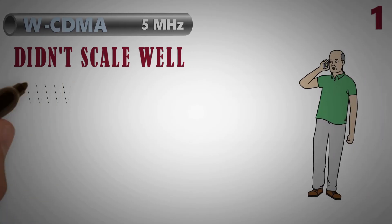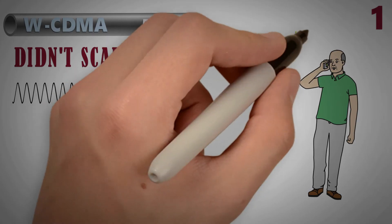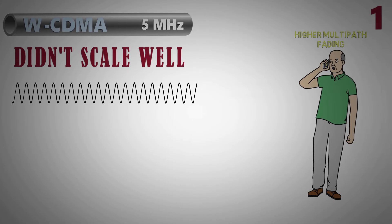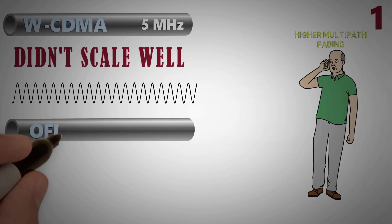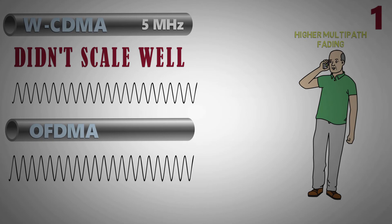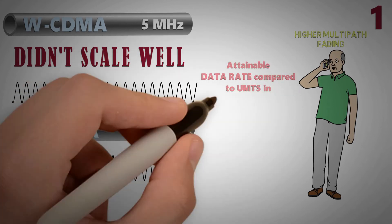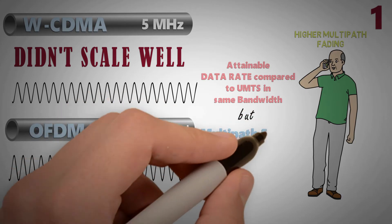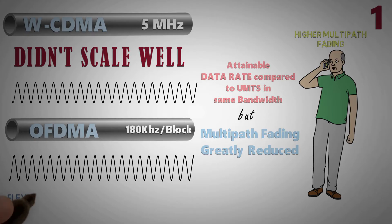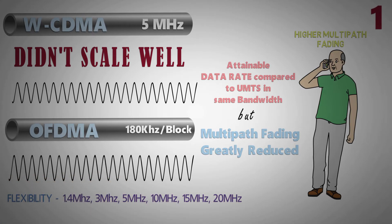Higher frequency means lower time between two transmission steps, which results in higher multipath fading. That's why the air interface was redesigned and OFDMA was introduced, where instead of spreading a signal over the entire band, the data is transmitted over many narrow bands of 180 kHz. As a result, the attainable data rate compared to UMTS is similar for the same bandwidth, but multipath fading is greatly reduced. It also provides flexibility, as LTE can have bandwidth from 1.25 MHz up to 20 MHz, which can be further increased by carrier aggregation, providing more efficient bandwidth utilization.